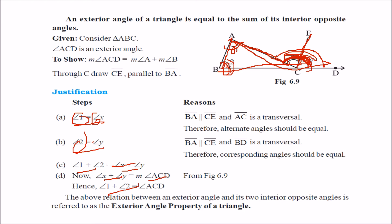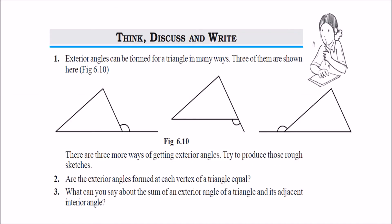This relation shows that the exterior angle and its interior opposite angles have the property: the exterior angle equals the sum of the two interior opposite angles. Exterior angles can be formed in a triangle in many ways — three of them are shown, and there are three more ways. Are the exterior angles formed at each vertex of a triangle equal? No. The sum of an exterior angle and its adjacent interior angle is always 180 degrees — they are linear pairs.